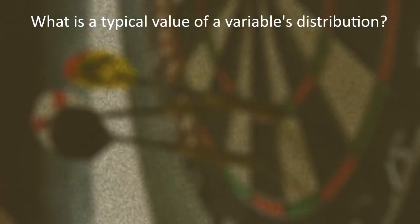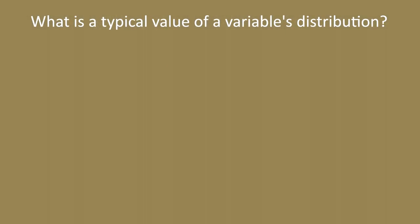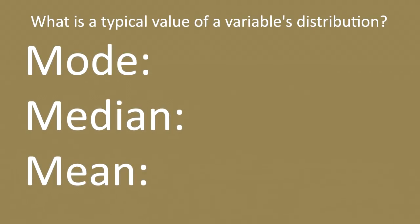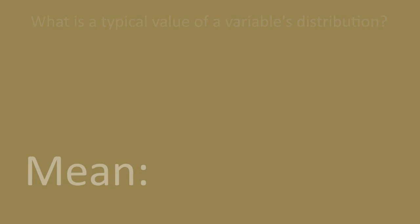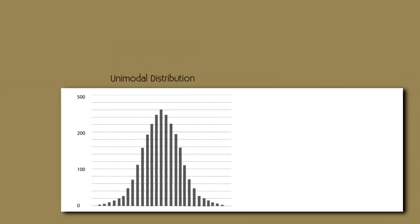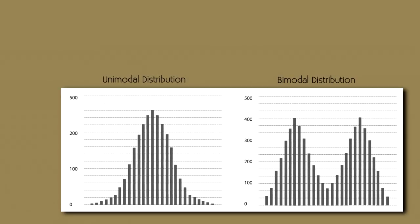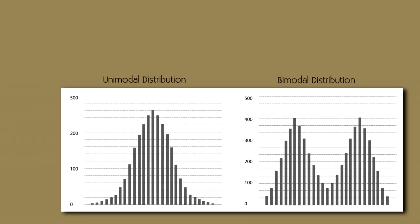Let's briefly review numerical measures of center. The numerical measure of center tells us the typical value of a variable's distribution. The three main measures are the mode, the median, and the mean. The mode is the value where the distribution has a peak — we can identify it visually from the histogram as the most commonly occurring value.